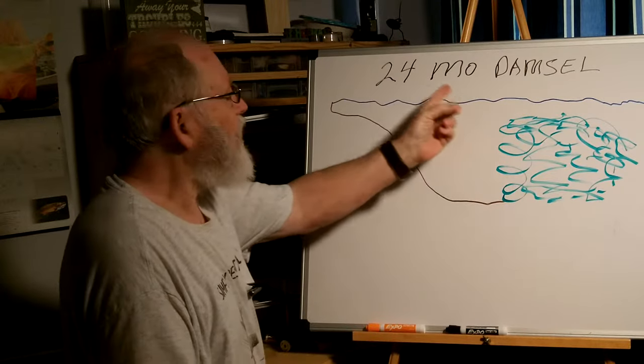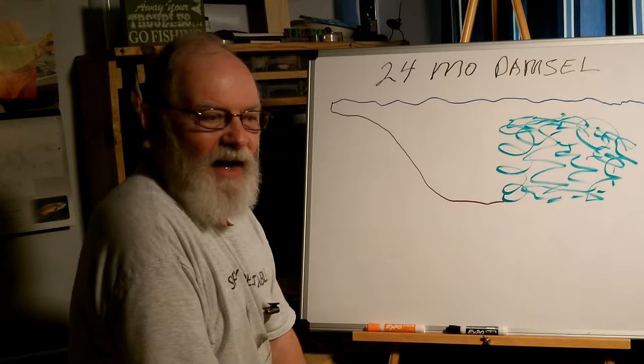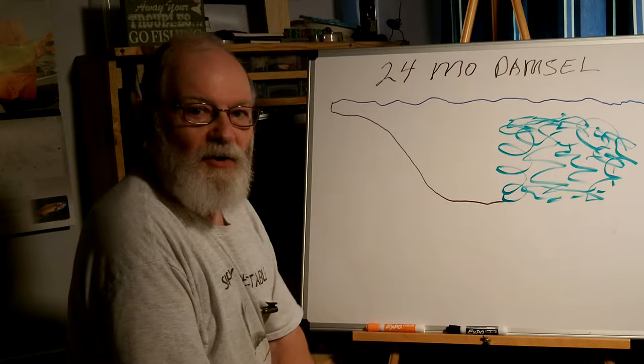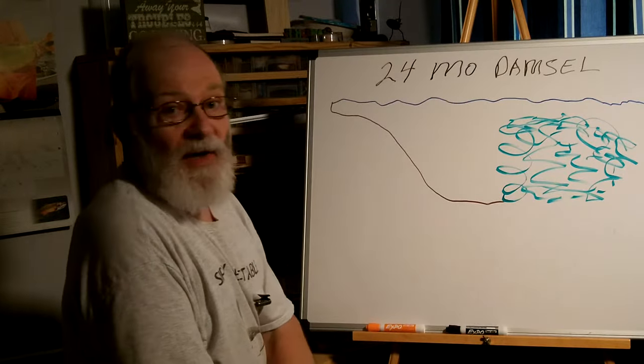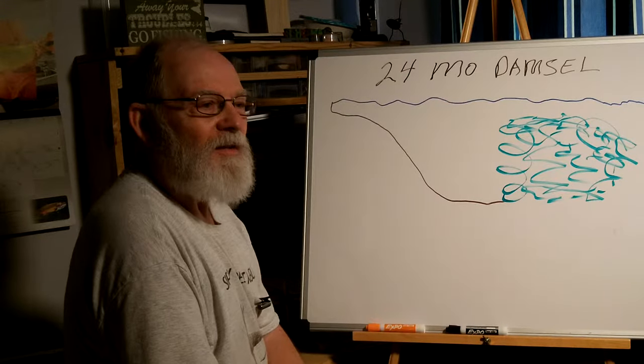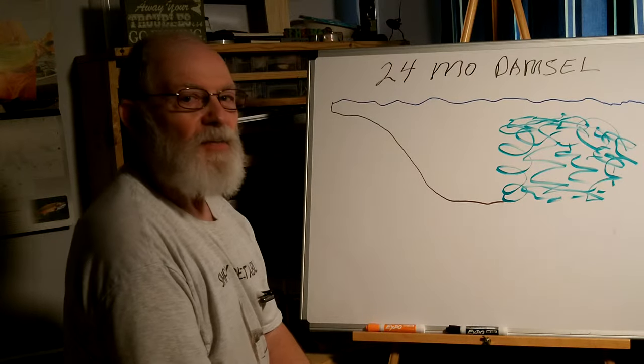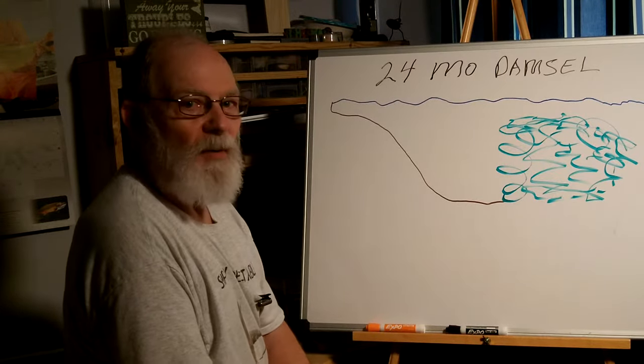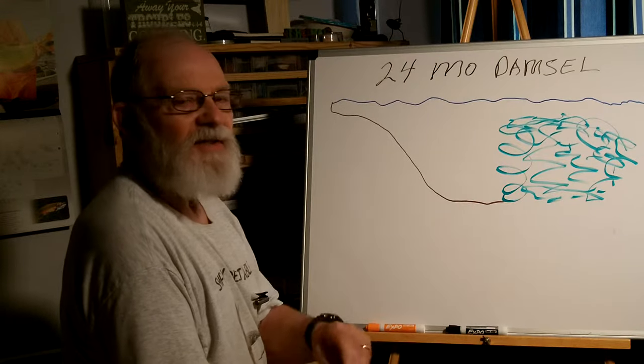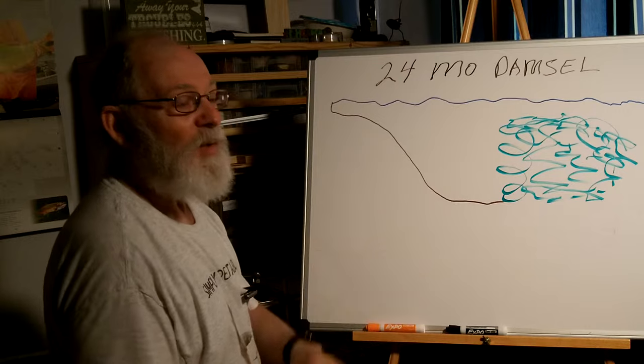This is the setup for the 24-month damselfly. Years ago on the internet, I read an article, and I'm not sure who wrote it. When I looked for it again, I couldn't find it. But he talked about the fact that there's a 24-month damselfly that actually comes out in the spring. It's almost full-grown, very large in size, and it has a very unusual feeding habit. Then he explained what the habit was.